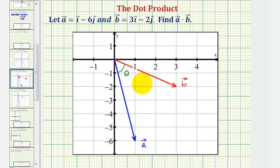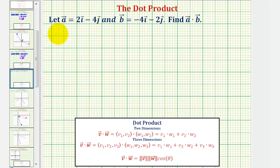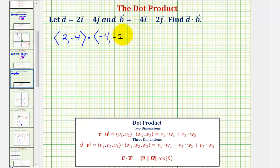Let's take a look at one more example. We have vector a with an x component of two and a y component of negative four, dotted with vector b, which has an x component of negative four and a y component of negative two. So the dot product will be equal to two times negative four, plus negative four times negative two.